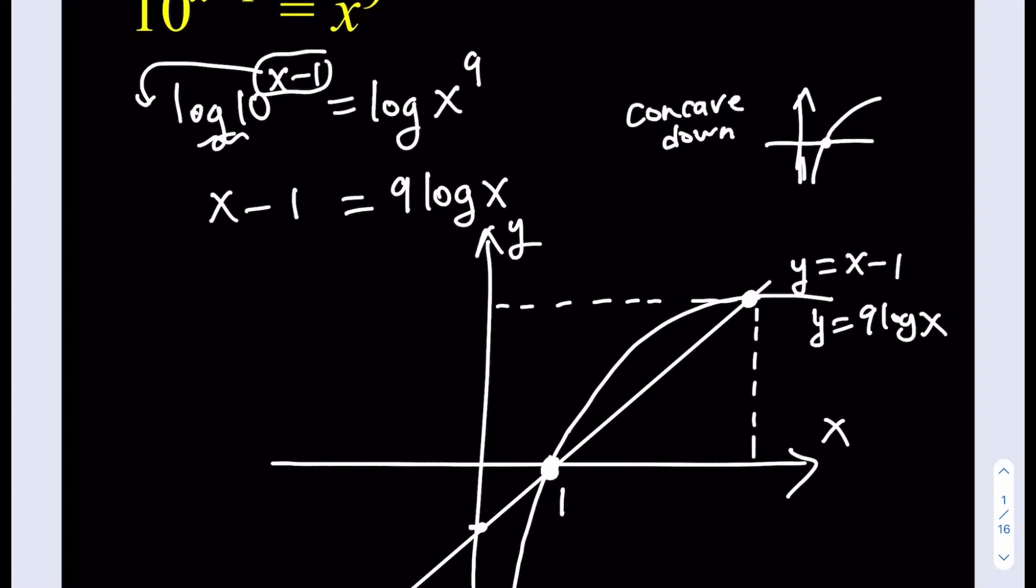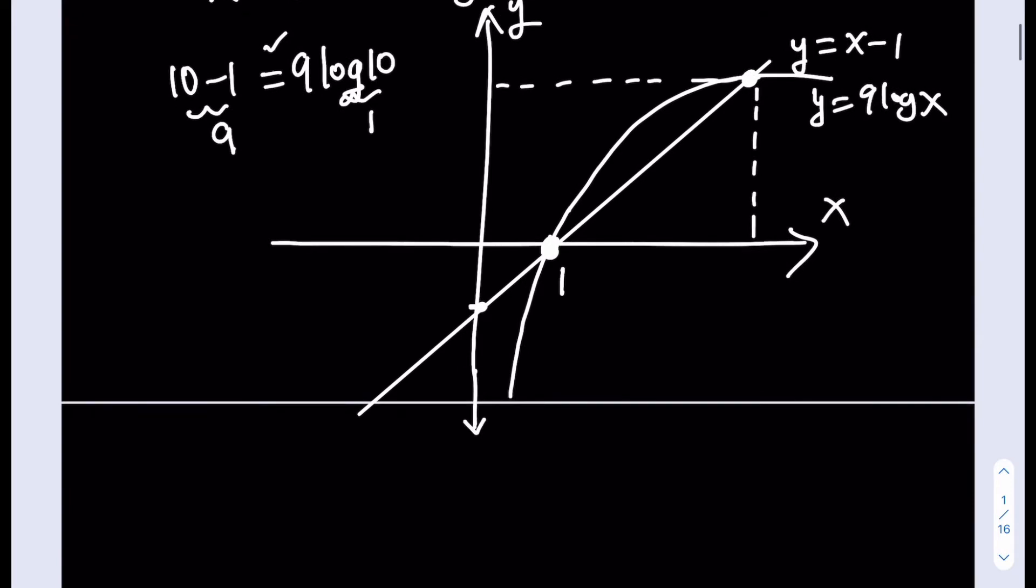But if you consider this equation here, if I replace x with 10, I'm going to be getting 10 minus 1 on this side and 9 times log 10 on this side. Log 10 is 1, and this is also 9, so 9 times 1 equals 9. So we get the equality from here, which means that x equals 10 is another solution. So this equation basically has two solutions. One of them is x equals 1, as you can see from the x-intercept. And the other solution is going to be x equals 10.